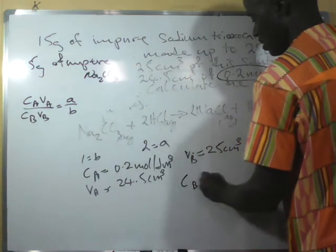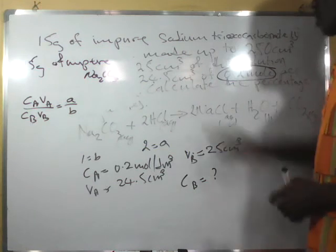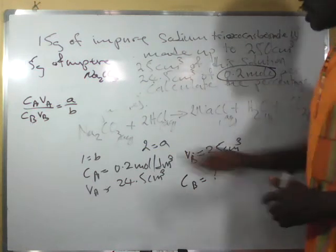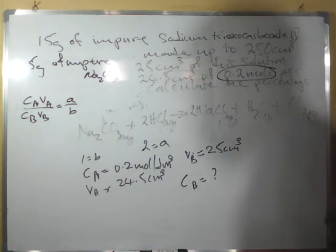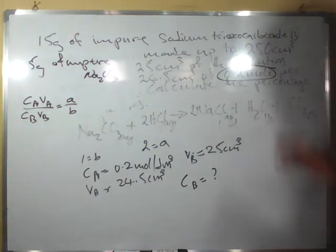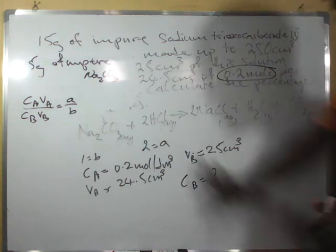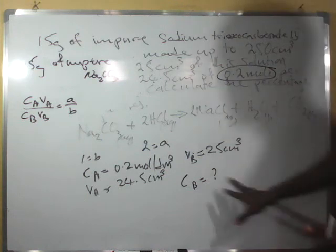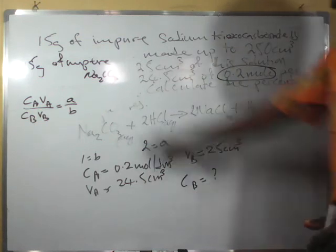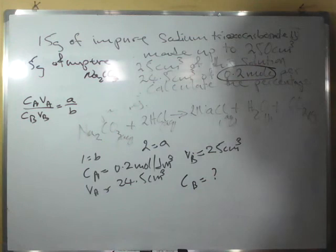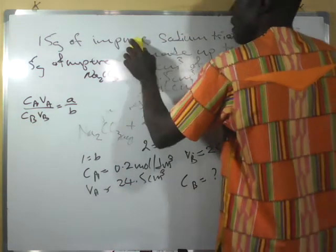We don't have the concentration of b — that is what we're going to find. In this reaction, only the pure substance takes part in the chemical reaction. The impurities do not react. So whatever concentration we calculate will be exactly the concentration of the pure sodium trioxocarbonate.